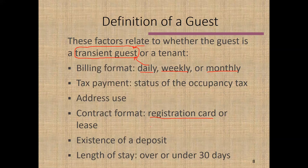Is there a deposit? A deposit would point more toward the tenant scenario — usually you don't request a deposit from a transient guest. Length of stay is not a bright line, but generally stays under 30 days look like a transient guest, and stays over 30 days look more like a tenant. We have to look at the complete picture, but that's an important element of the analysis.